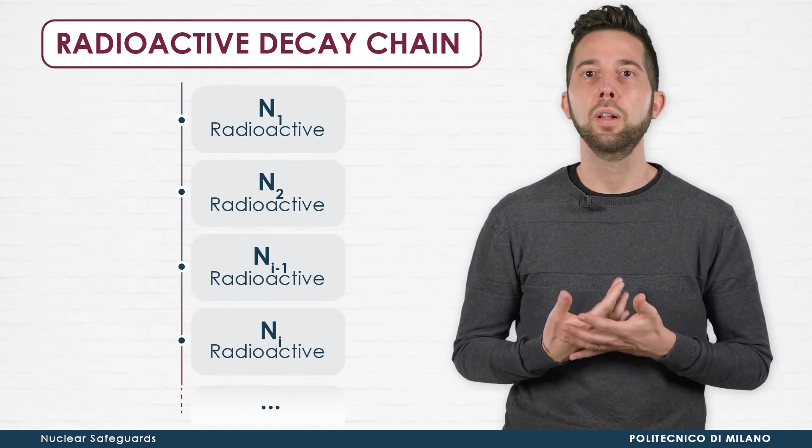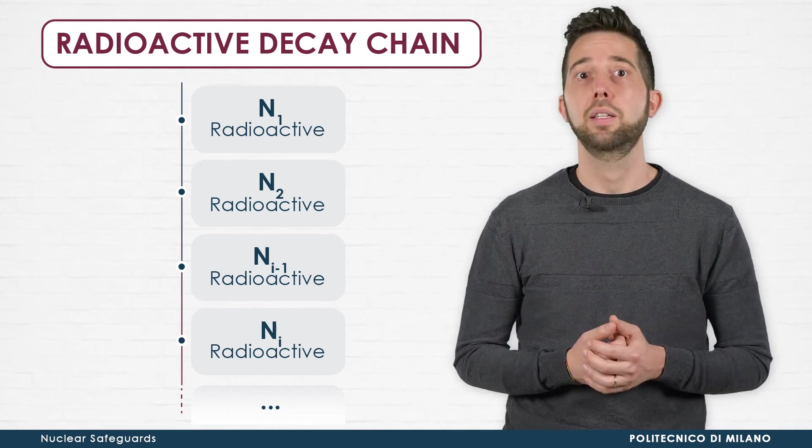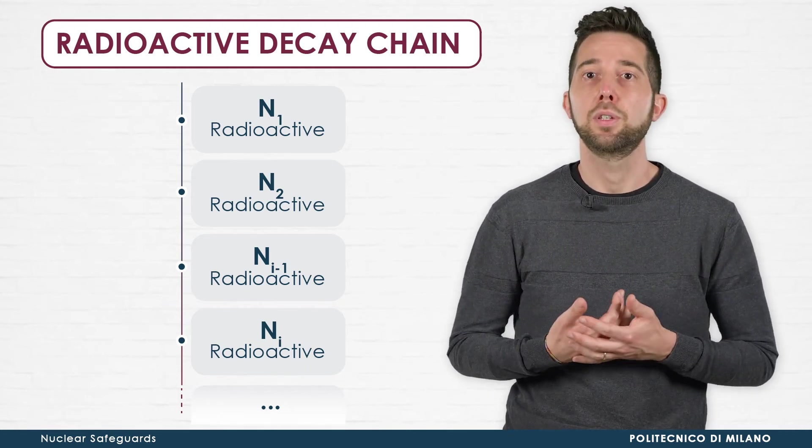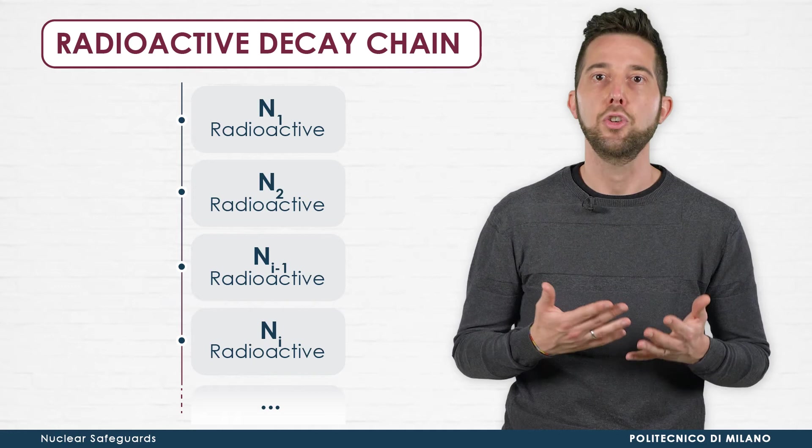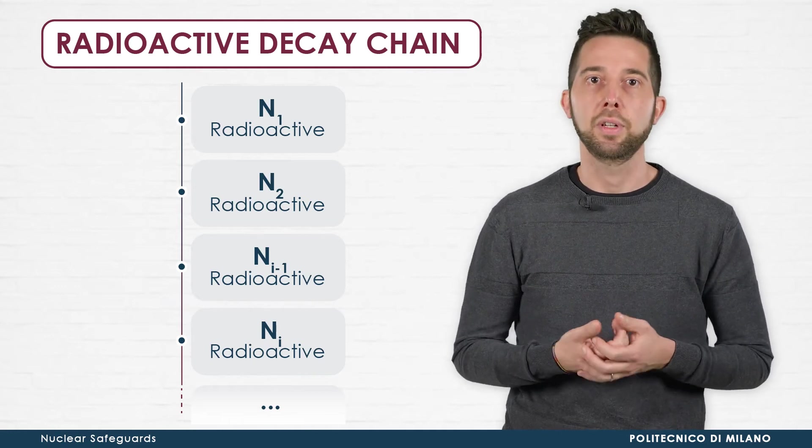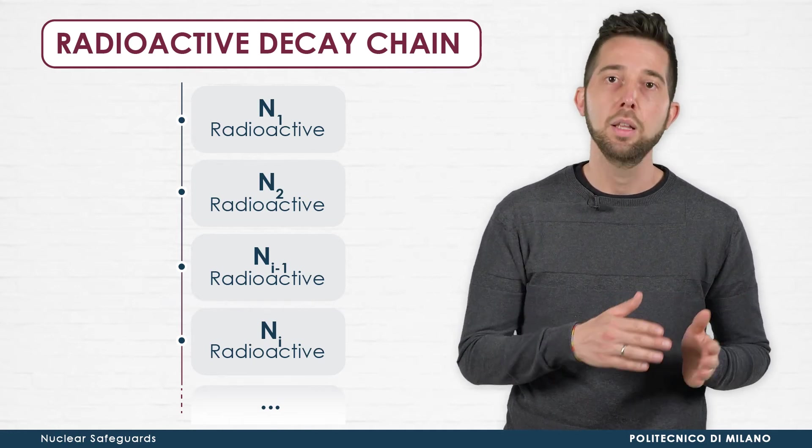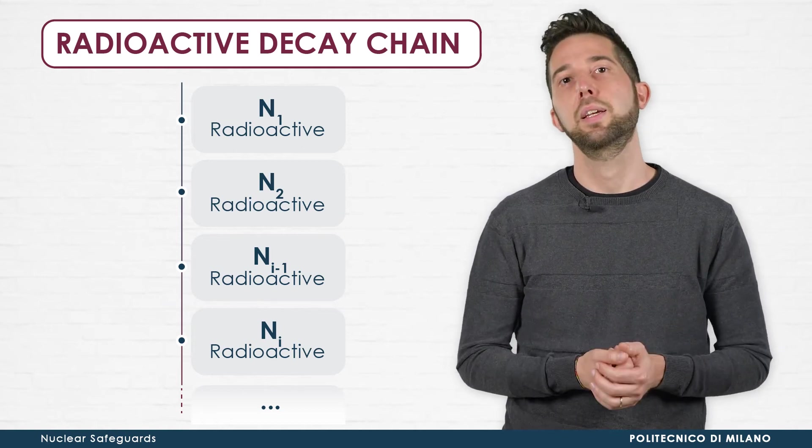Another common situation is a radioactive nucleus that decays into product nuclei which are in turn radioactive, giving rise to the so-called radioactive decay chain, in which there are transitions from type 1 to type 2, 3, 4, etc.